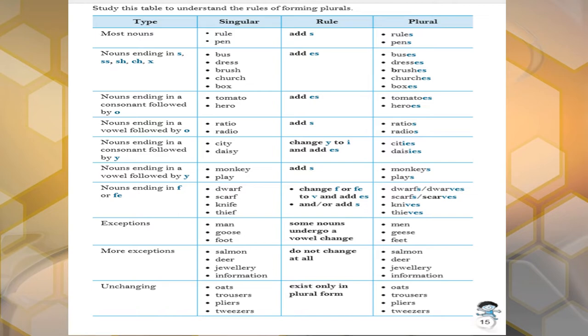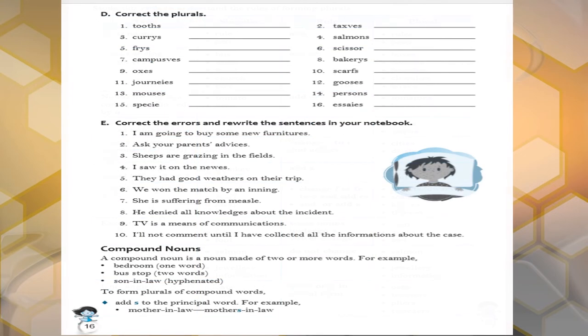Some unchanging words are there. They don't change. They are already in a plural form. Oats, trousers, pliers, tweezers, scissors. These are already in a plural form. You don't have to do anything for that.